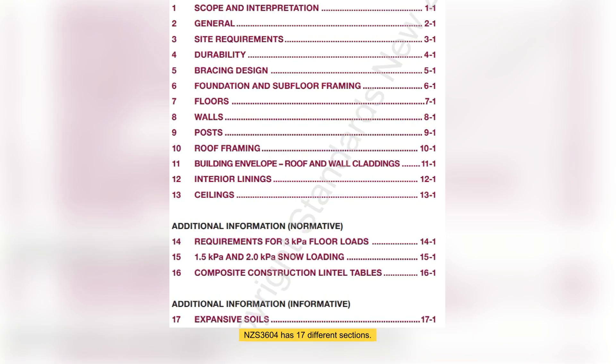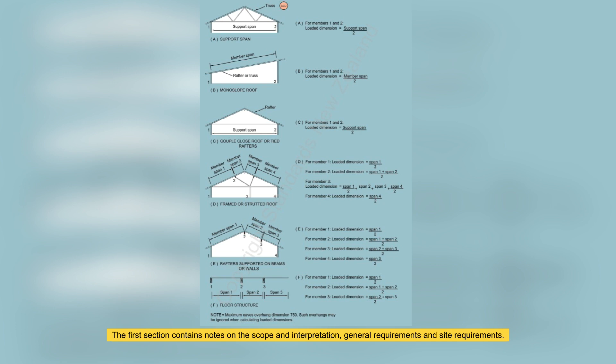NZS 3604 has 17 different sections. The first section contains notes on the scope and interpretation, general requirements and site requirements. It shows building classifications and a table of imposed floor live load reference values. Definitions of spans and loaded dimensions are also given.